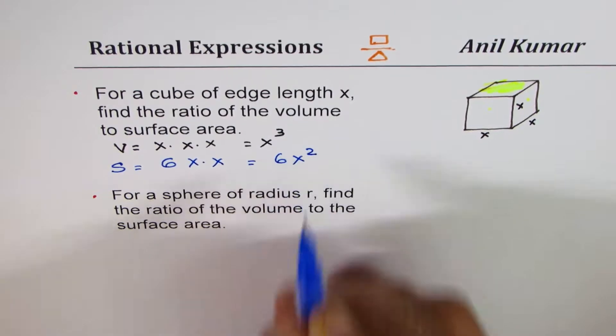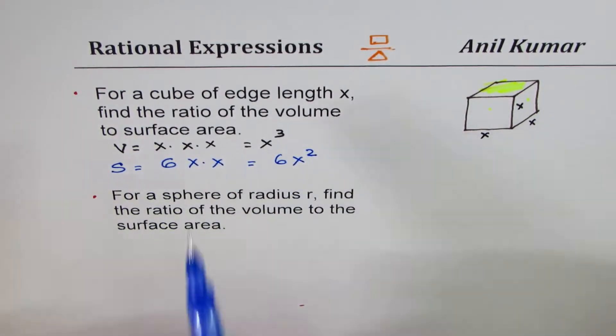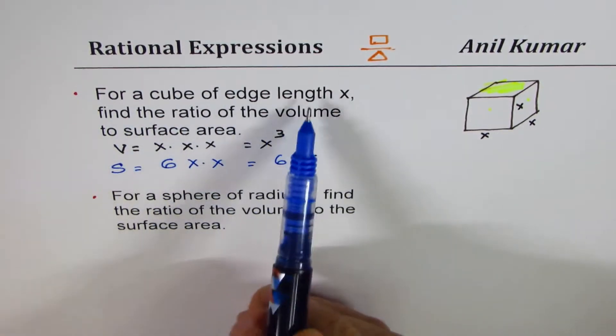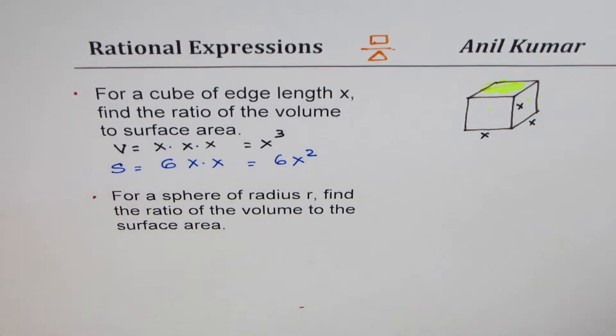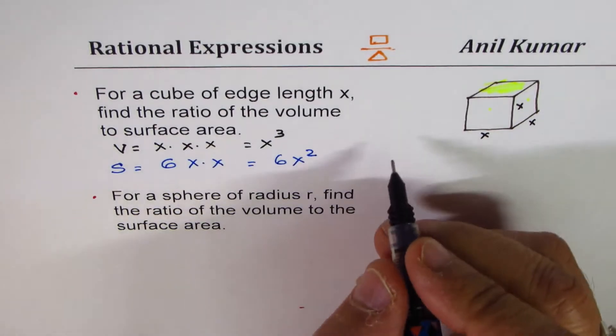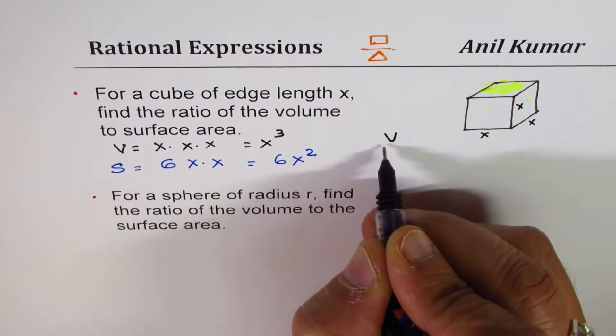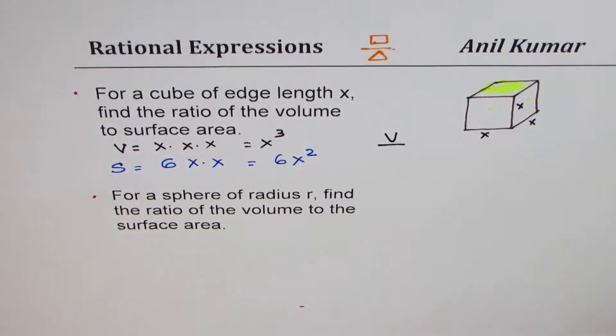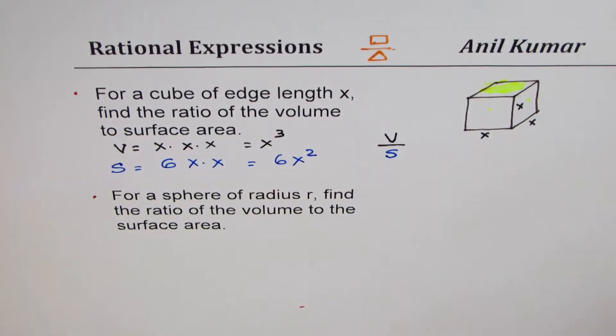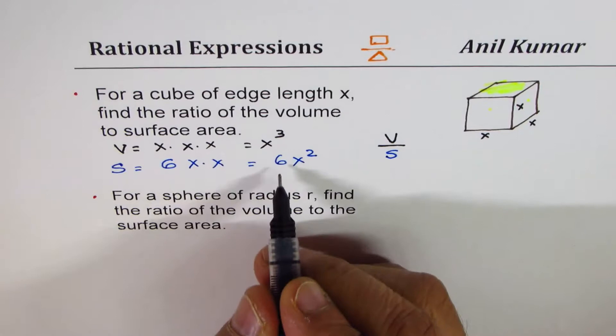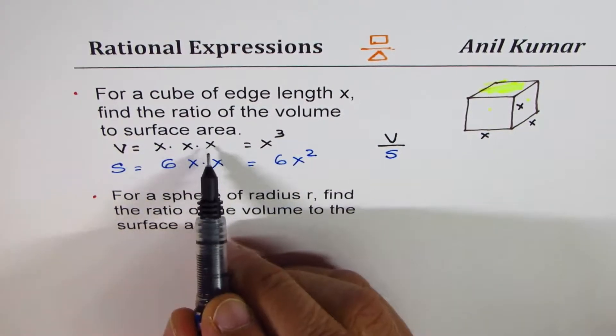The question here is for a cube of edge length x find the ratio of volume to surface area. That really means we are interested in finding ratio means volume divided by surface area. This is what we need to find. So we have x³ and 6x². x³ means three x's.